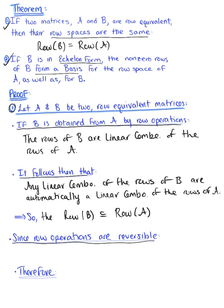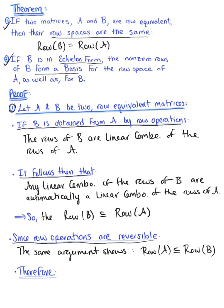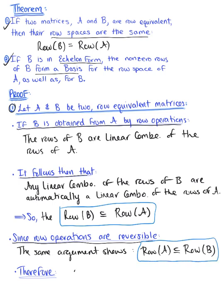Since row operations are reversible, the same argument shows that the row space of matrix A is a subspace of the row space of matrix B. Using logic, if the row space of B is contained in the row space of A, and the row space of A is contained in the row space of B, then the row spaces are the same — the row space of matrix B equals the row space of matrix A.